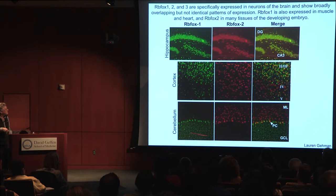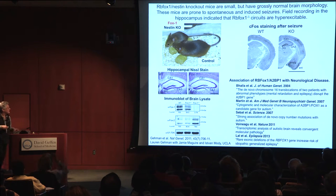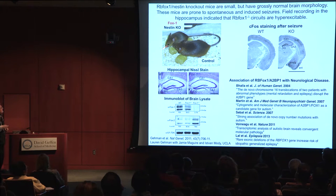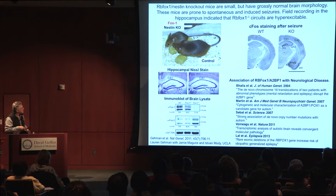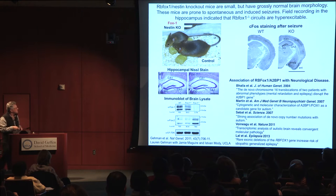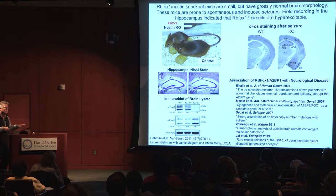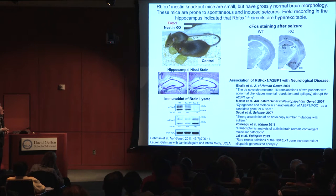Lauren Gaiman in the lab took a genetic approach to examine the role of these proteins in the brain. She made floxed alleles for conditional knockout, knocking out the FOX1 gene in all neurons of the developing brain with a nestin-Cre line. The mice were born and looked relatively normal, though they were small, and their brains were largely anatomically normal. However, Lauren noticed that these mice were prone to having spontaneous seizures, which by c-fos staining appeared to travel from the entorhinal cortex into the hippocampus.